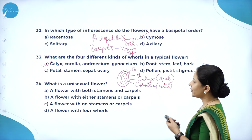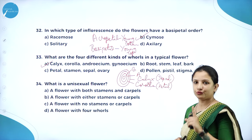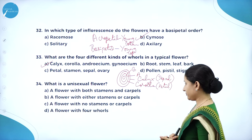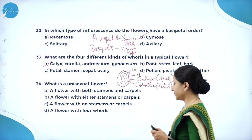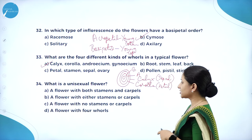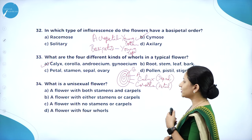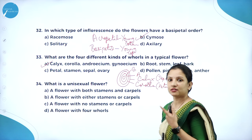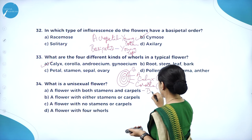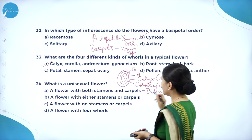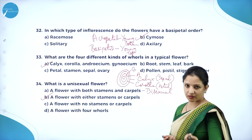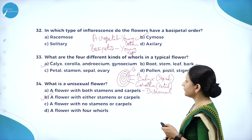What is a unisexual flower? A flower with either stamens or carpels — not both. If both stamens and carpels are present in the same flower, it is bisexual. So a unisexual flower has either stamens or carpels. Stamens are the male reproductive organ; carpels are the female reproductive organ.